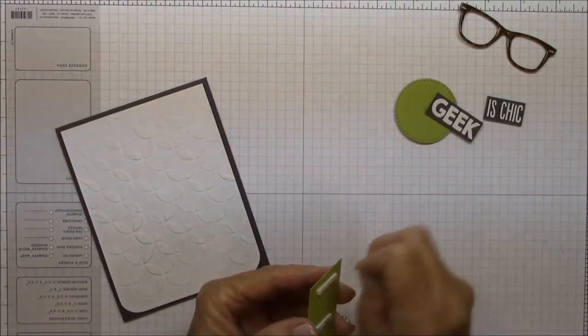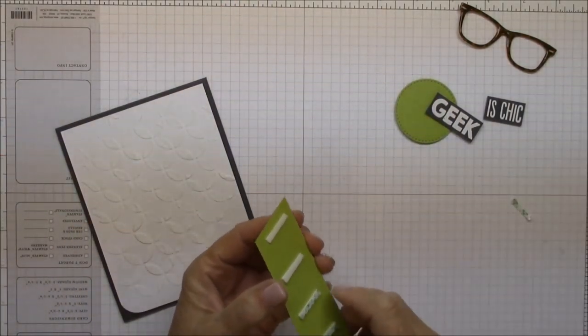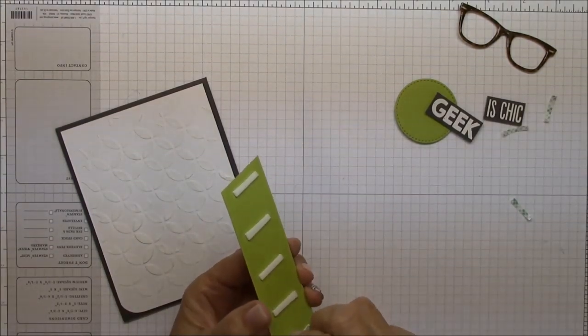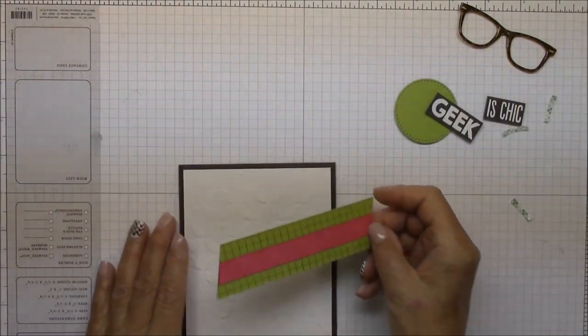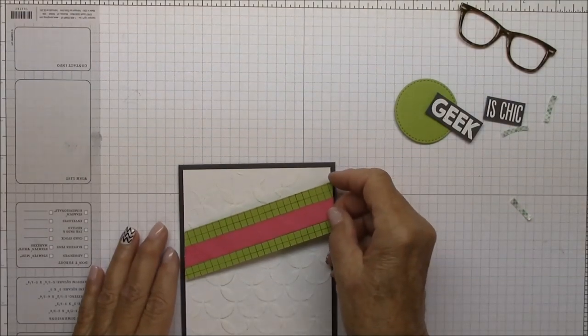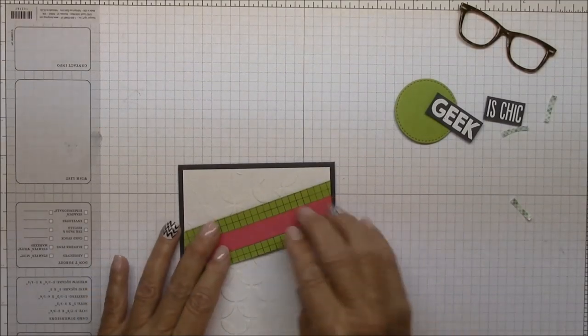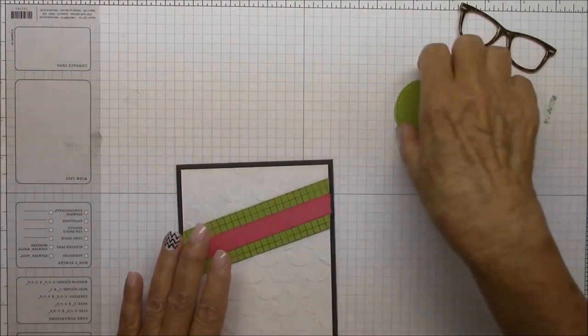So I'm going to remove the backing and carefully apply. Okay, I've already got some foam on the back of the green so I'm just going to remove the backing from that and put it towards the top of the card. Lining it up with the white panel edges.